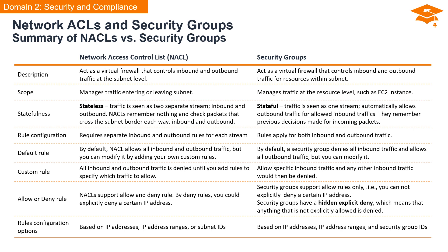NACLs support both allow and deny rules, enabling explicit denial of certain IP addresses. In contrast, security groups support only allow rules and have a hidden explicit deny — anything not explicitly allowed is denied. For NACLs, rules are configured based on IP addresses, IP address ranges, or subnet IDs. Security groups, on the other hand, allow rules based on IP addresses, IP address ranges, and security group IDs.